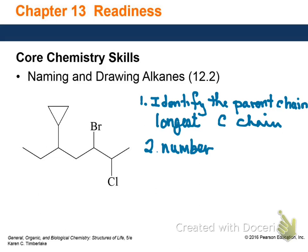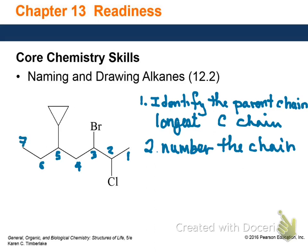The rule for numbering is: you number from the end that's closest to the first branch or functional group. So if starting from one end gives positions 1, 2, 3 and from the other gives 1, 2, that closer end is where you start. For this example, numbering gives us 1, 2, 3, 4, 5, 6, 7.